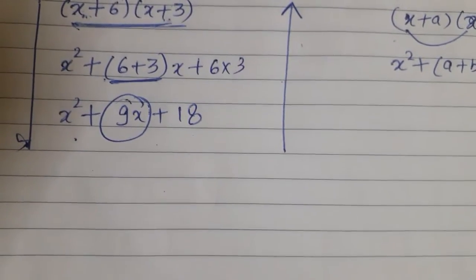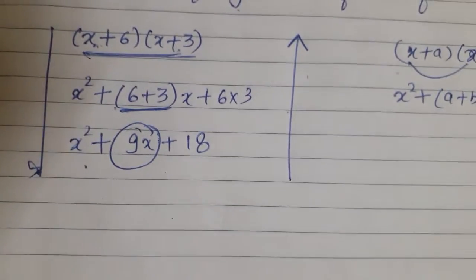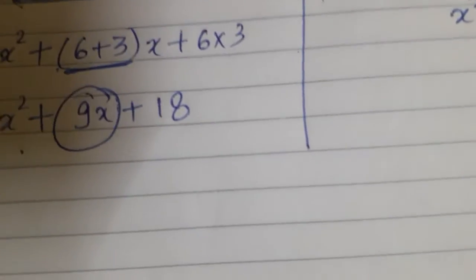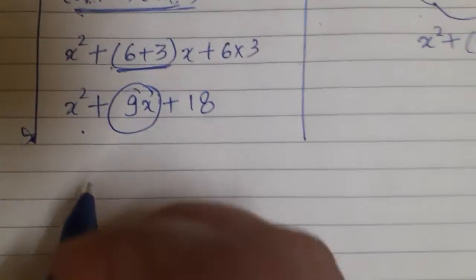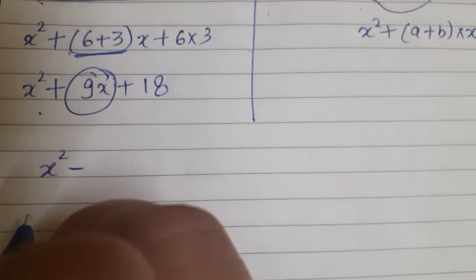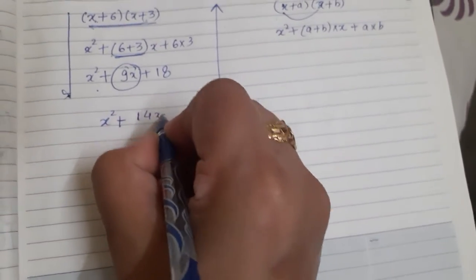Now, the expression which we are getting here is in the form of x square plus q x plus r. Like for example, I am taking one expression: x square plus 14x plus 33.